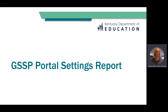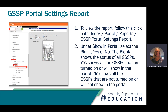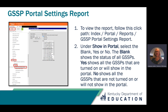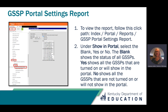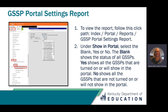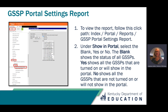Let's next talk about the Gifted Student Service Plan Portal Settings report. This report is used to show which students can be seen by parents in the portal. To view the report, follow this click path: Index, then Portal, then Reports, then GSSP Portal Settings report. Under Show in Portal, select either blank, yes, or no. Blank shows the status of all GSSPs; Yes shows all GSSPs turned on for the portal; No shows all GSSPs not turned on for the portal.